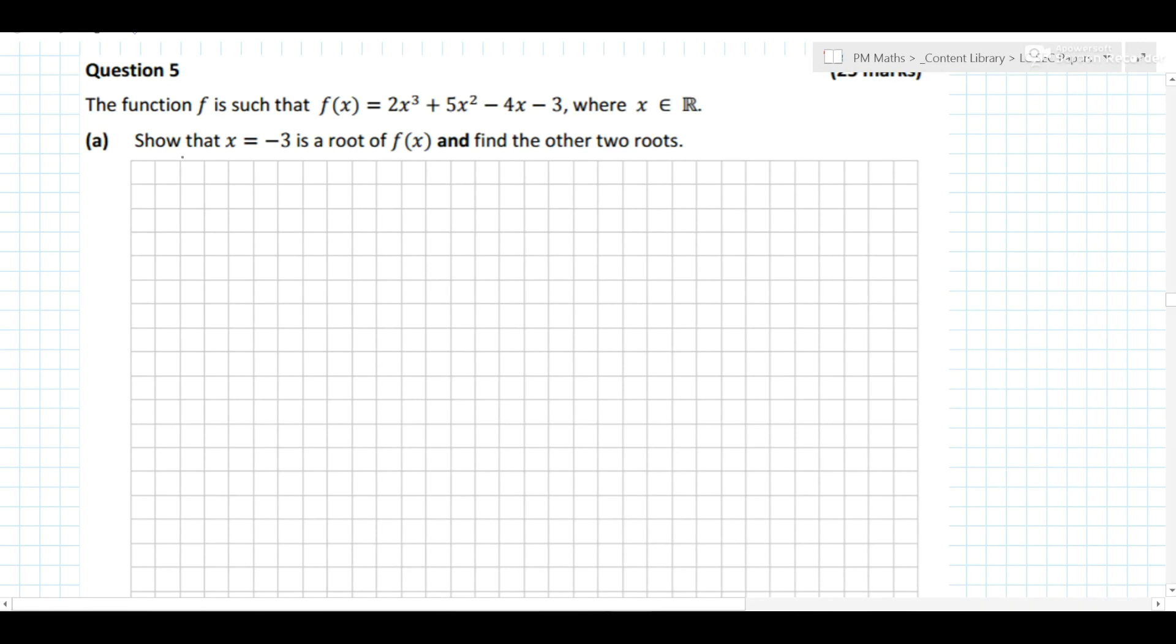Okay, so this next question simply says show that x equals minus 3 is the root of the function. If it's a root of it, it must satisfy the function. So subbing in minus 3 instead of x, when you multiply it out, it should satisfy it and equal to 0. So we got minus 54 plus 45 plus 12 minus 3, and f of minus 3 equals 0, therefore x equals minus 3 is a root.